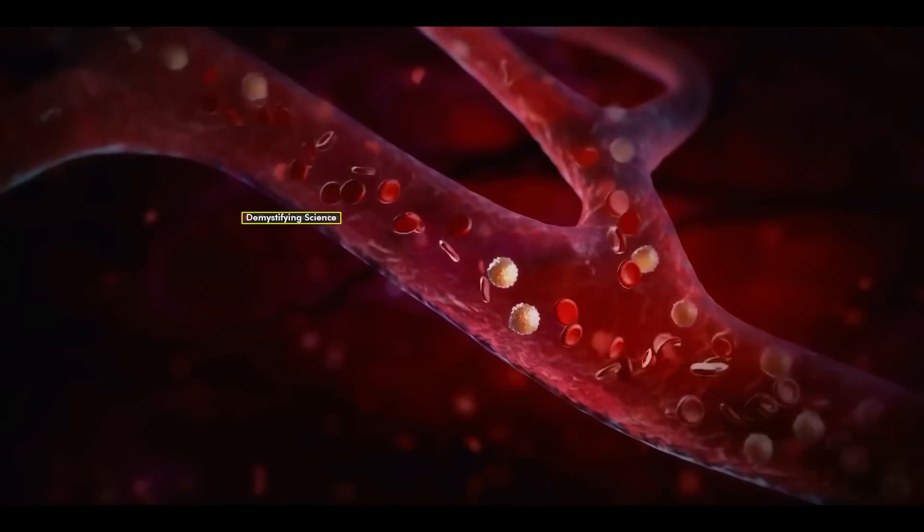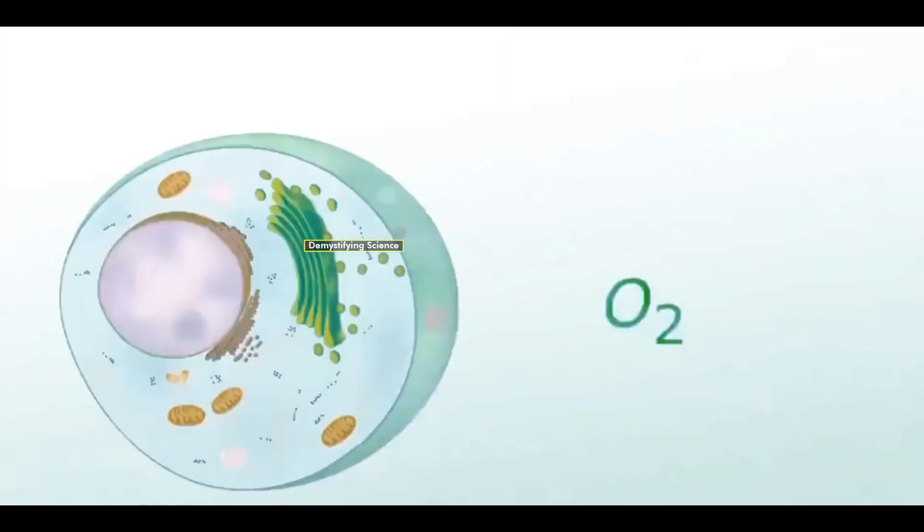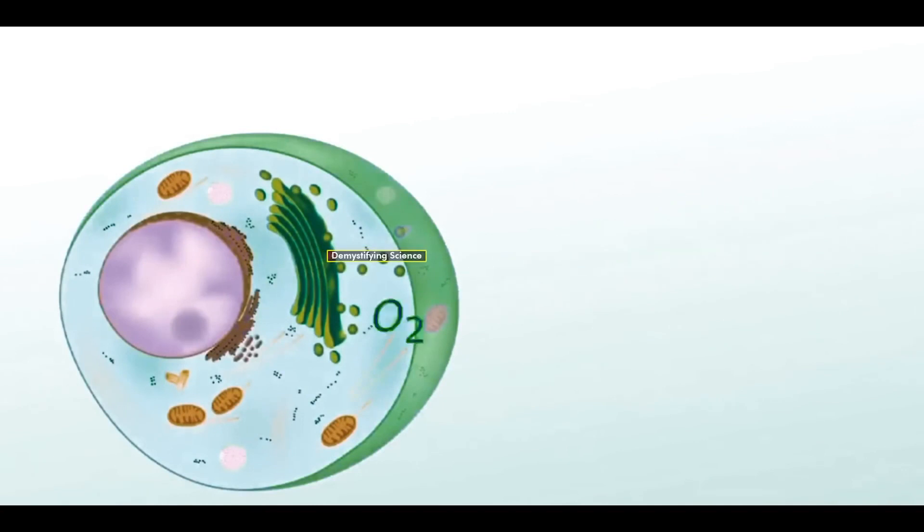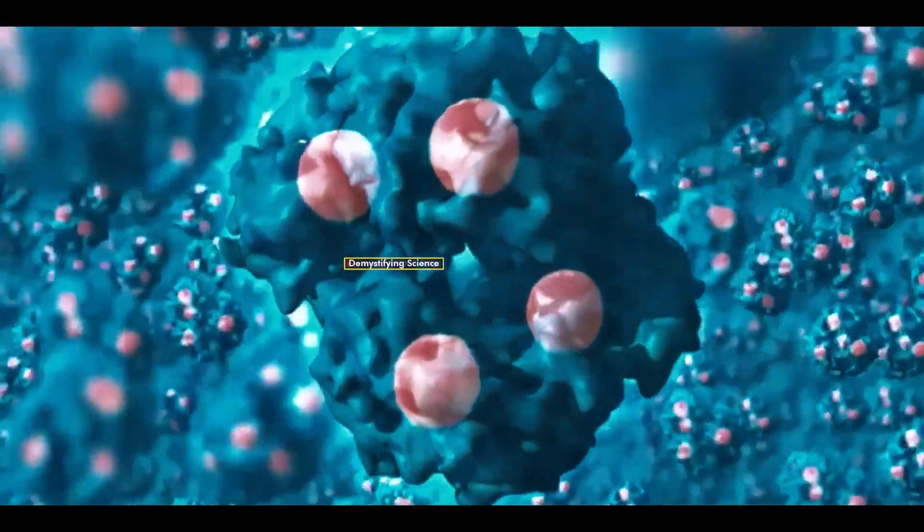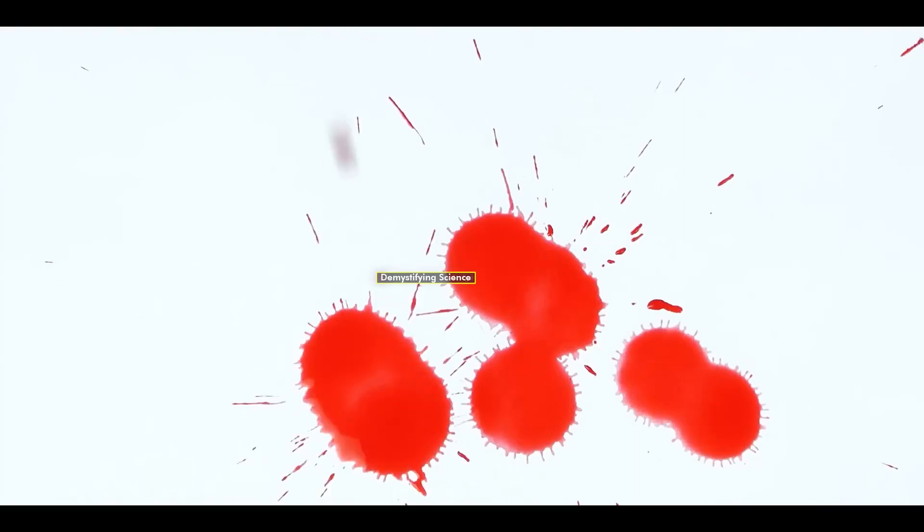Hemoglobin is a blood protein that carries fresh oxygen from the lungs to the body cells where the cells utilize that oxygen. When there is enough oxygen bound to hemoglobin in our blood, the blood color appears bright red.